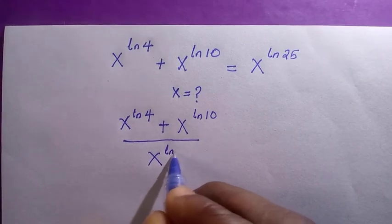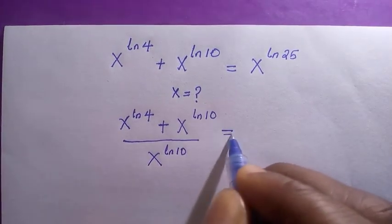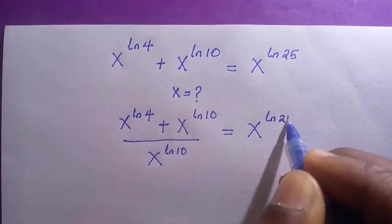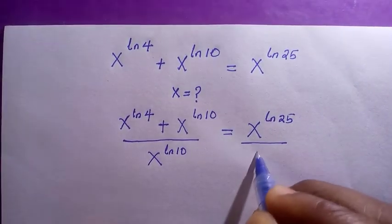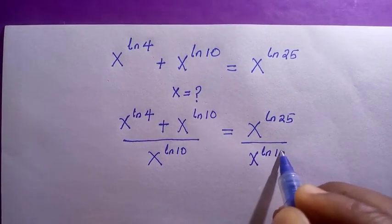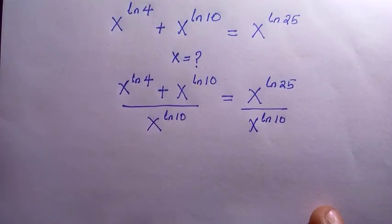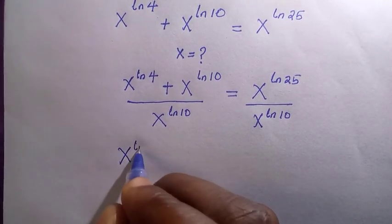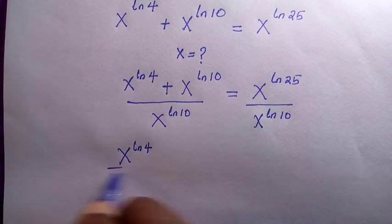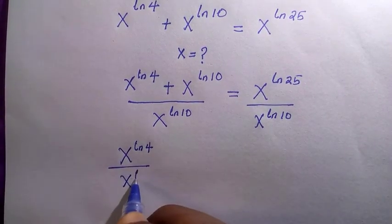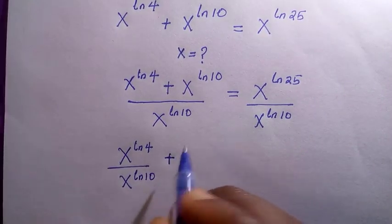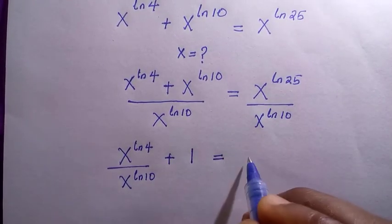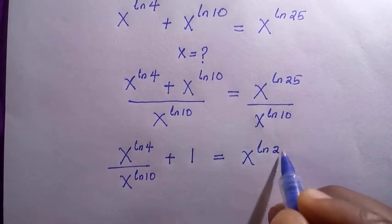If I divide through by x raised to the power of ln 10, we have x raised to the power of ln 4 divided by x raised to the power of ln 10, plus 1, equals x raised to the power of ln 25 divided by x raised to the power of ln 10.